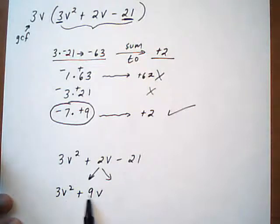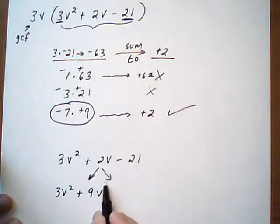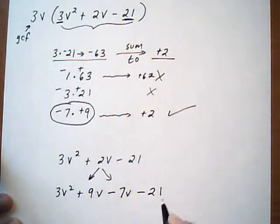If I had put the 7 here, I wouldn't have that common factor. That's the only reason I paired it like that. Okay, so we're splitting the middle term into plus 9V, take away 7V, and then minus 21 comes down.